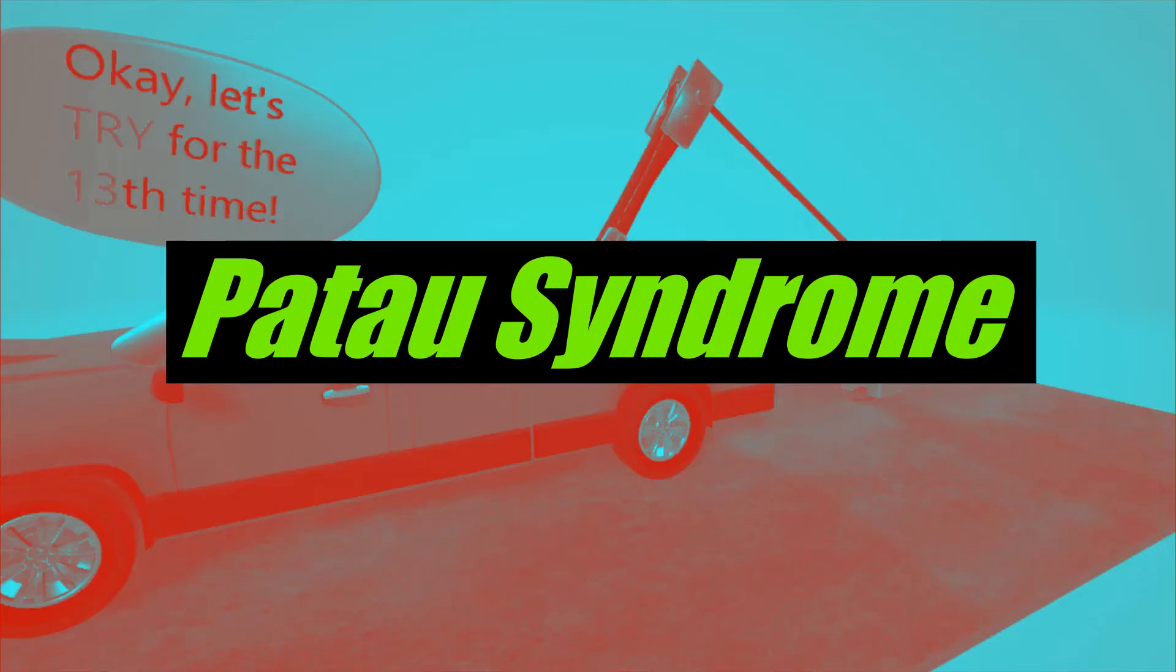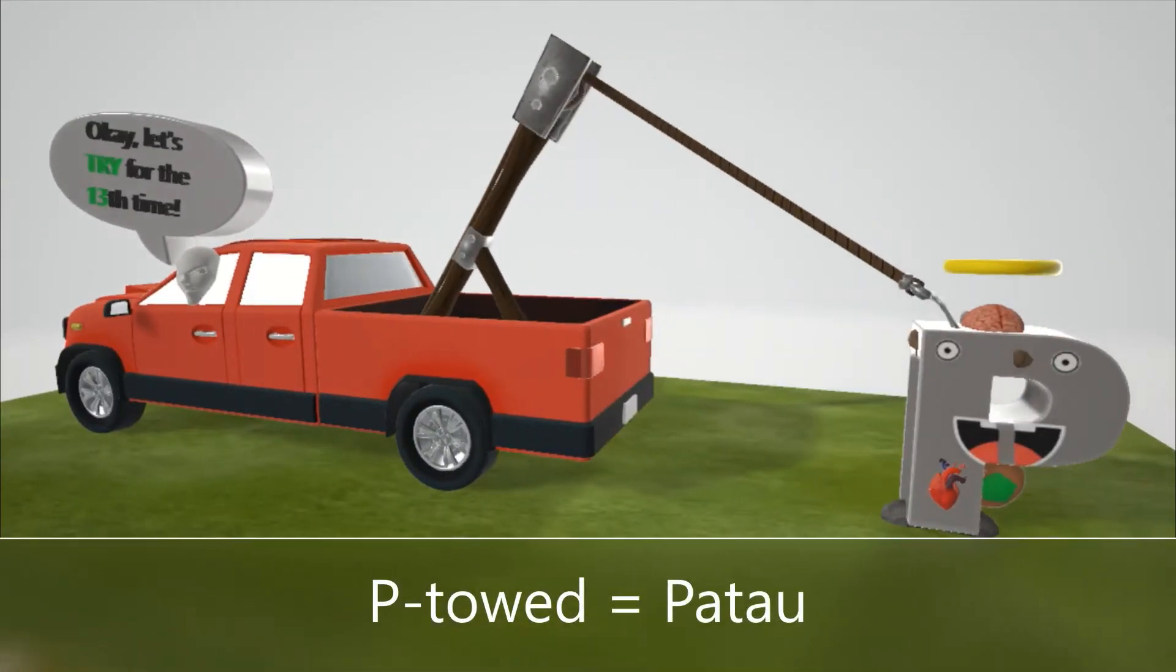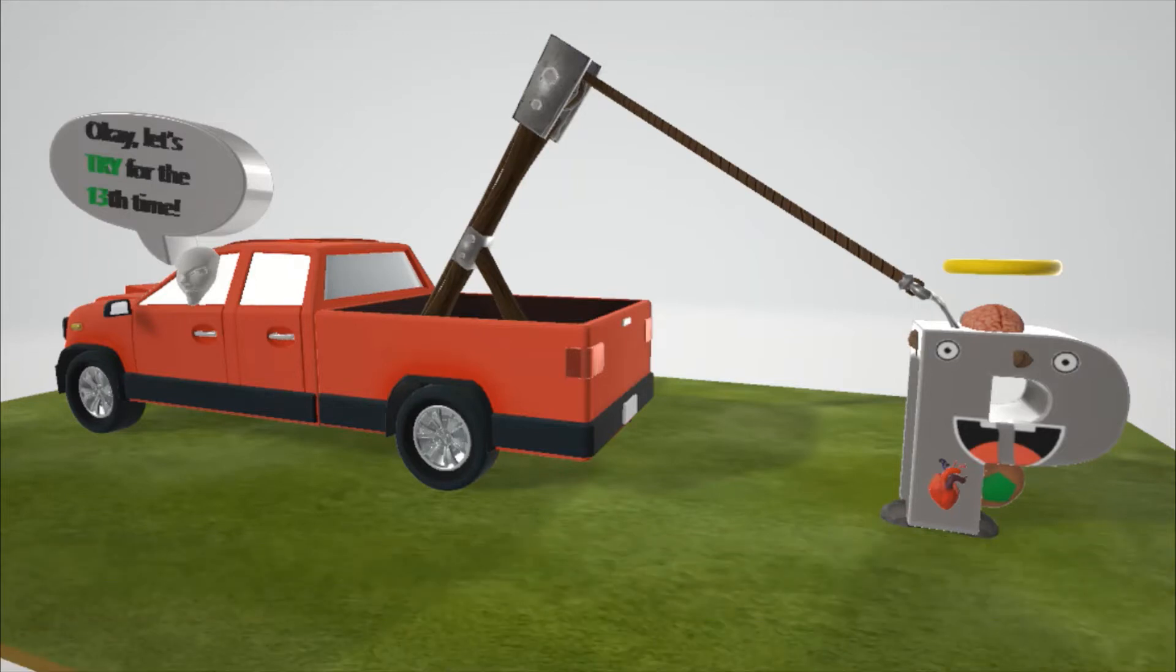All right, this scene is on Patau syndrome, and it's going to be represented by this pea over here. Pea being towed away, pea being towed for Patau. Patau syndrome is caused by trisomy 13.